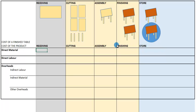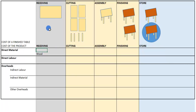Starting with direct material, the first direct material in this process is wood — we need wood to make the tables. To get the wood into the receiving division we may have to pay delivery costs, called freight on purchases or carriage on purchases, to bring the wood from the supplier to our premises. All of this forms part of my direct material costs.